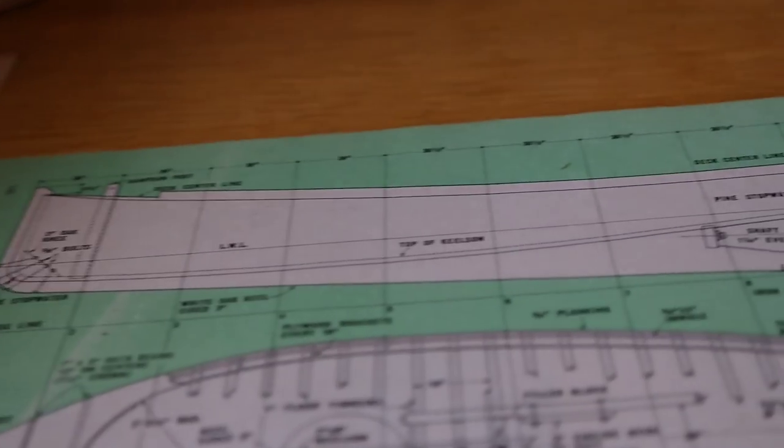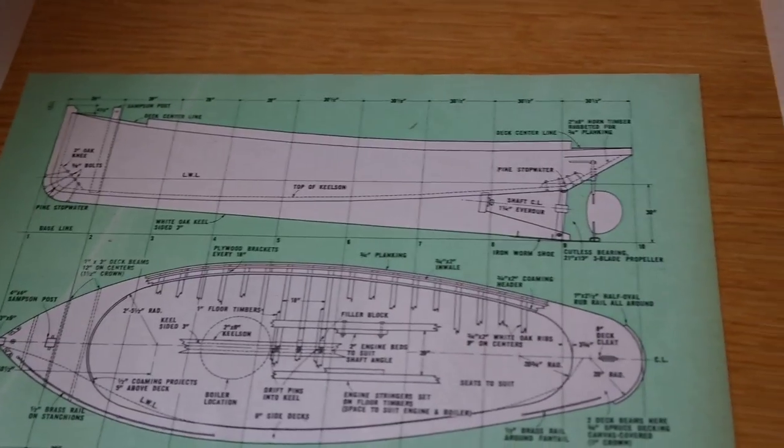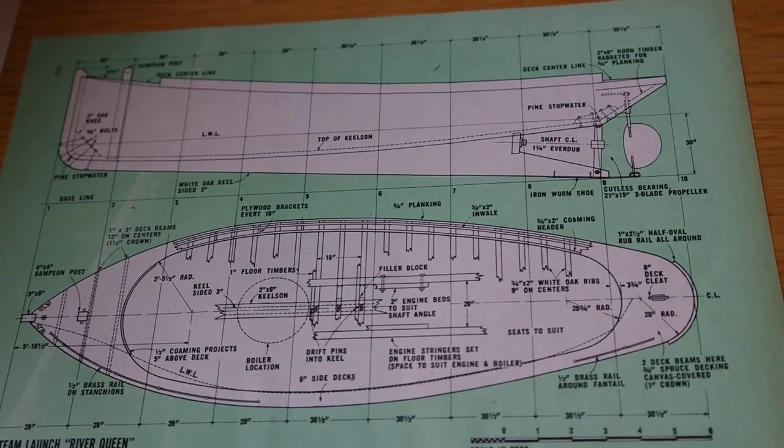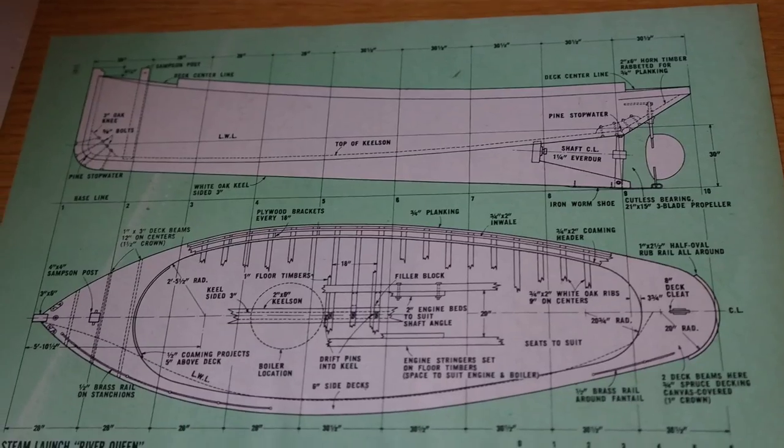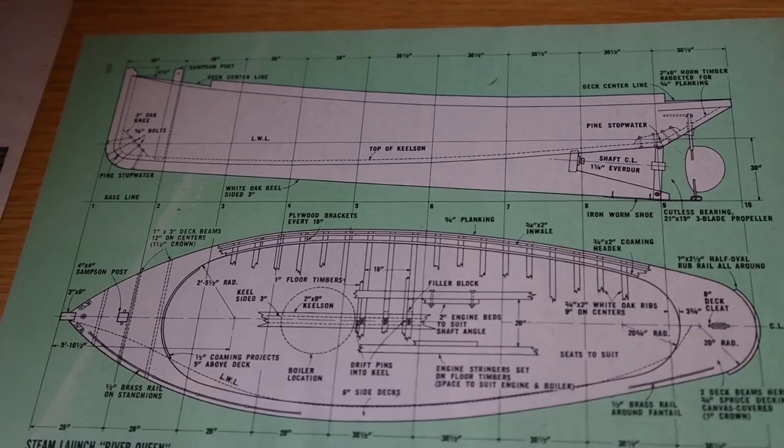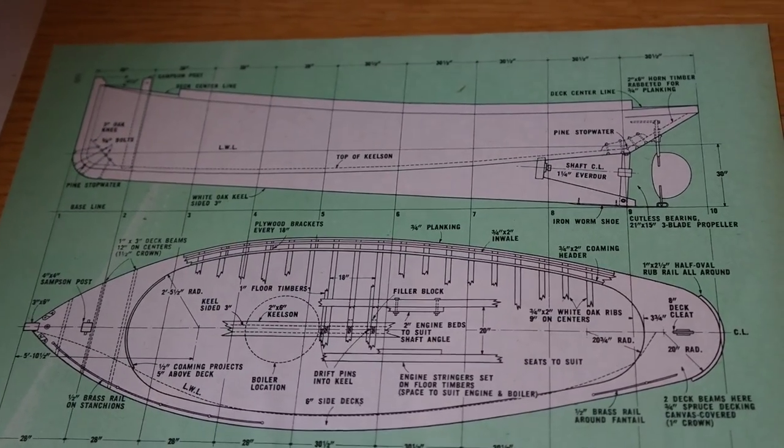So there's the general arrangement of the plan. Just try and focus it a bit better. There we are. So the original boat was built in about 1906, I think, something like that.